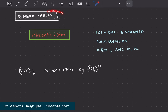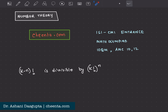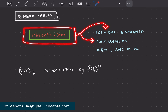Hello everyone, welcome to another episode of Math Olympiad and ISI CMI Entrance Number Theory. This video is created at Chhinta.com. My name is Ashini Dasgupta. As you know, Chhinta has outstanding programs on ISI CMI entrances, Mathematical Olympiads like IOQM, American Math Competitions, and so on. You can check the link in the description for more details.